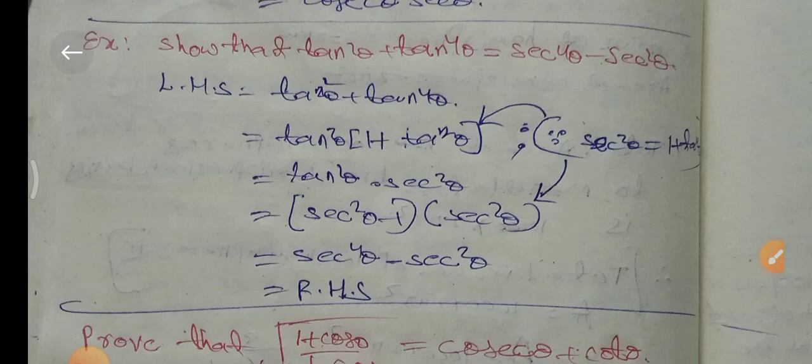Next question: prove that tan⁴θ plus tan²θ equals sec⁴θ minus sec²θ. Left hand side equals tan⁴θ plus tan²θ. We take tan²θ common from tan²θ plus tan⁴θ.